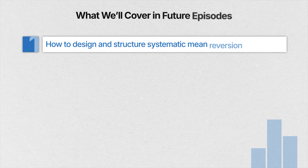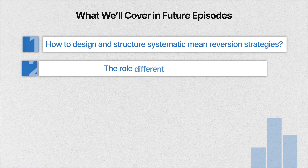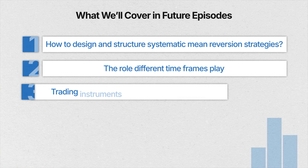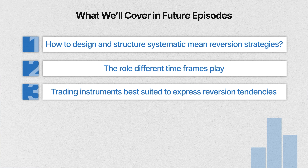That brings us to the end of this episode on mean reversion trading. In the coming episodes, we'll go deeper, exploring how to design and structure systematic mean reversion strategies, the role different timeframes play, and the trading instruments best suited to express reversion tendencies in the market. I hope you found this episode useful and interesting — do share your questions, thoughts, and feedback in the comments. I'll do my best to respond. Thank you for watching, and see you in the next one.